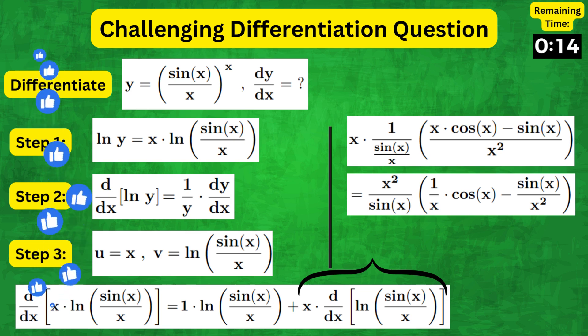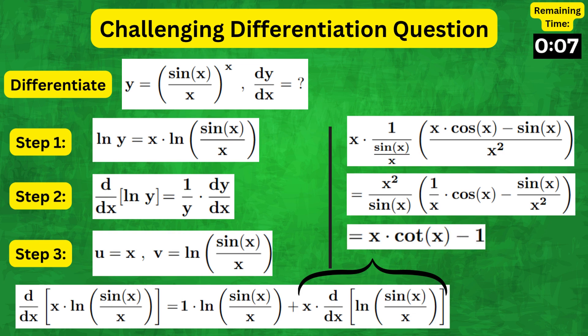Now tidying up and recognizing that cos x over sine x is equal to cot x, we get x cot x minus 1.